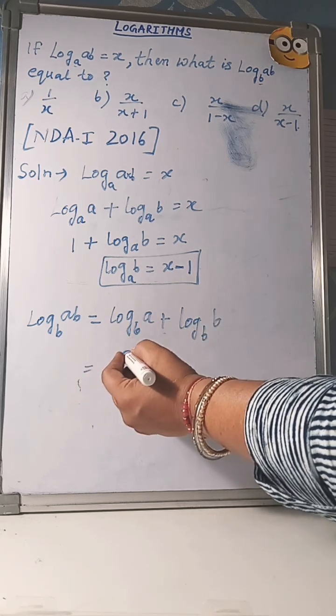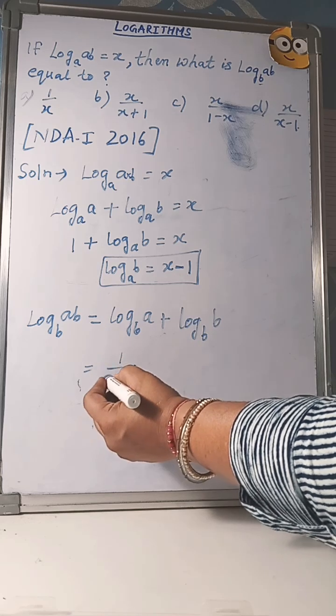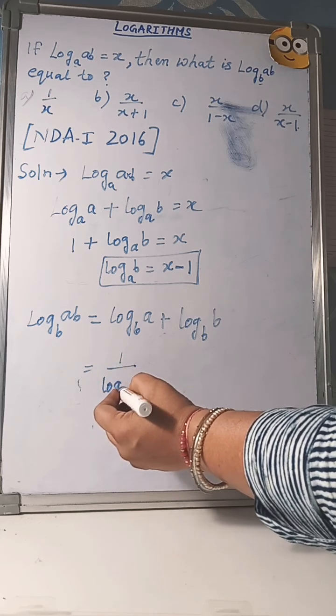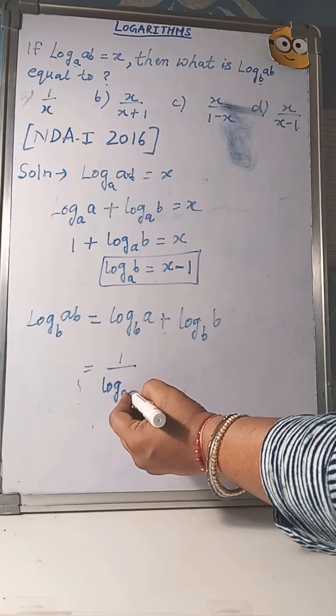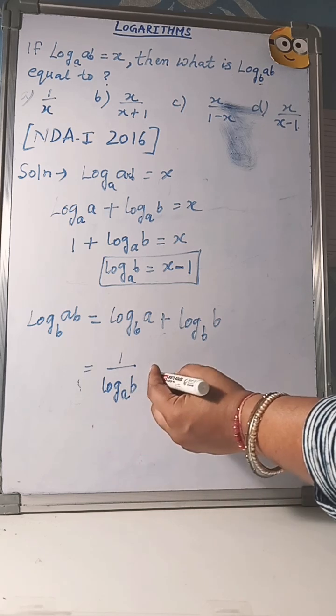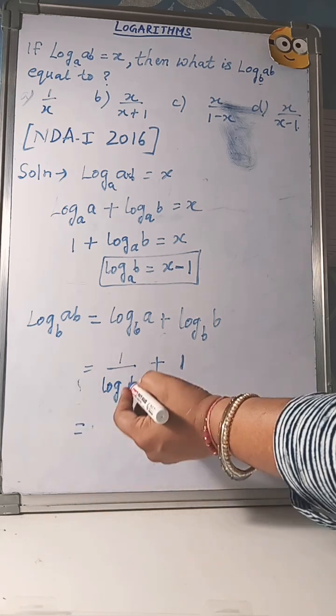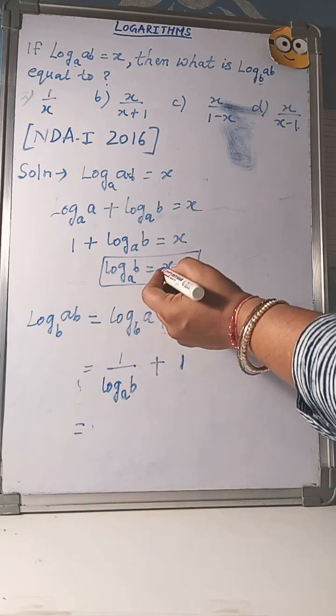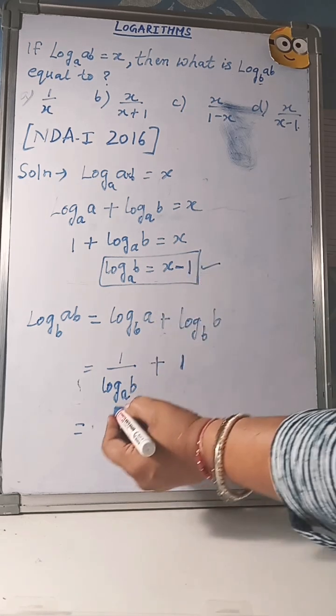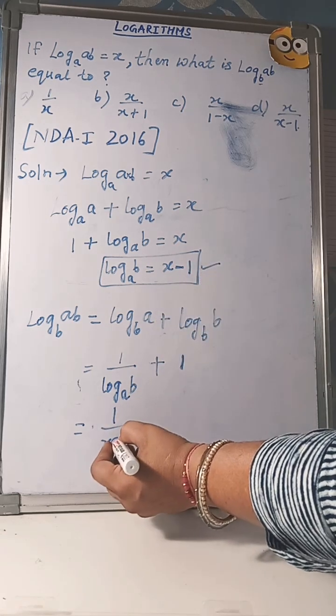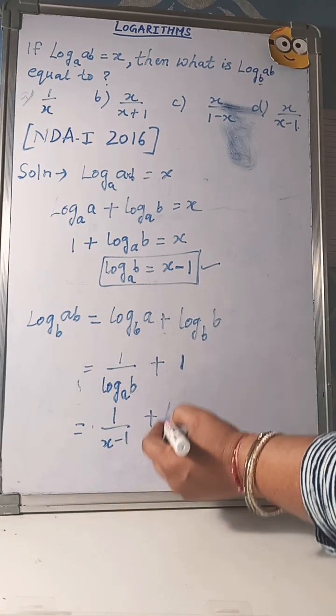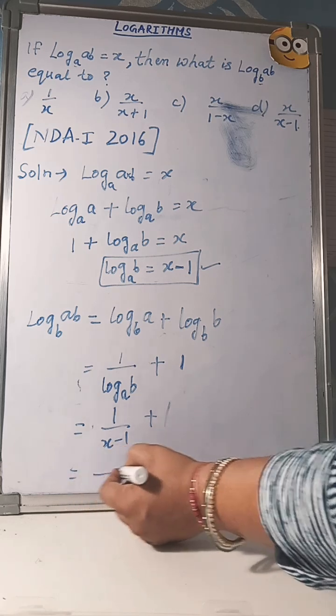And here using base changing property, you can write this log, now base become A and B plus value of this is 1. And value of log B to the base A is x minus 1. Put this value x minus 1 plus 1. Now solve this.